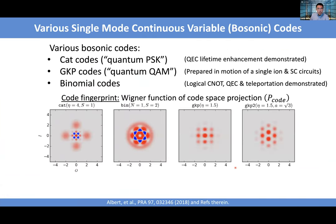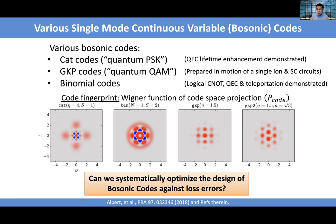I've discussed different bosonic codes and their connection to classical coding. One way to characterize these codes is to plot the Wigner function of the projection operator onto the logical space. The four-legged cat code shows four extended legs with Wigner function negativity, indicating it's a quantum code. The binomial code correcting two-fold loss has a nice six-fold symmetry pattern. The GKP square and hexagonal lattice codes show their respective lattice patterns. Each code has a unique Wigner function fingerprint. The natural question is: which is the better code for correcting loss errors?